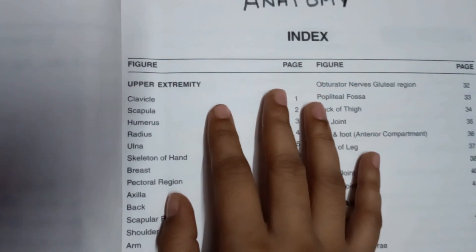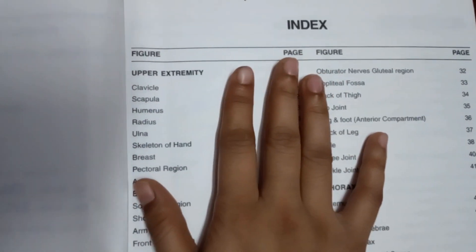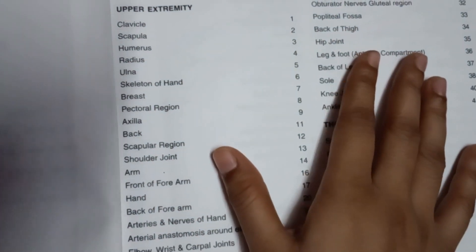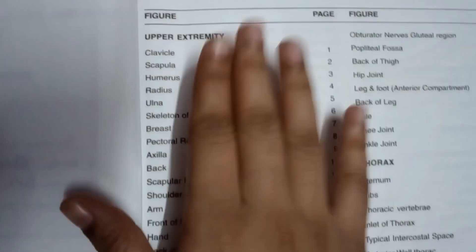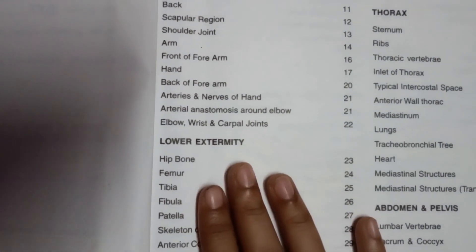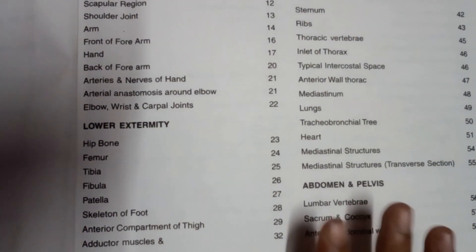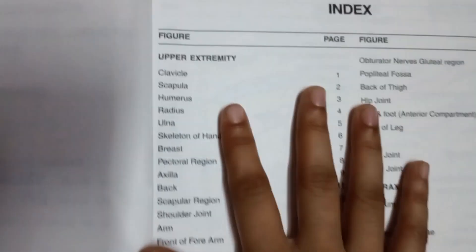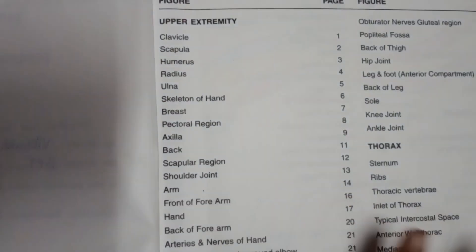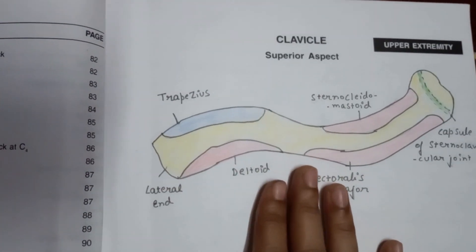Hello friends, welcome back to my channel. In this video I am going to show you my anatomy practical book. In this practical book, all of the diagrams are differentiated into different compartments: firstly upper extremity, then lower extremity, after that thorax, and the last is abdomen and pelvis. One by one I have drawn all the diagrams.